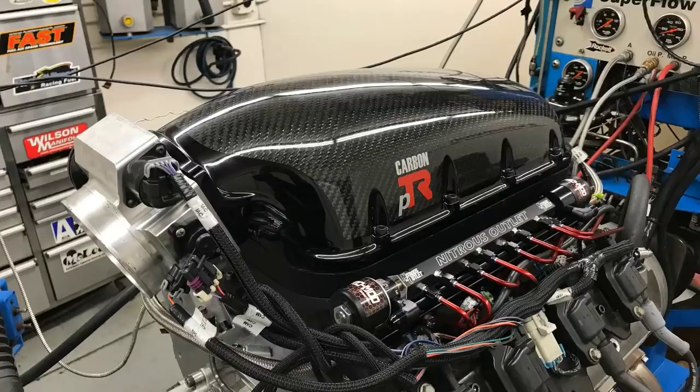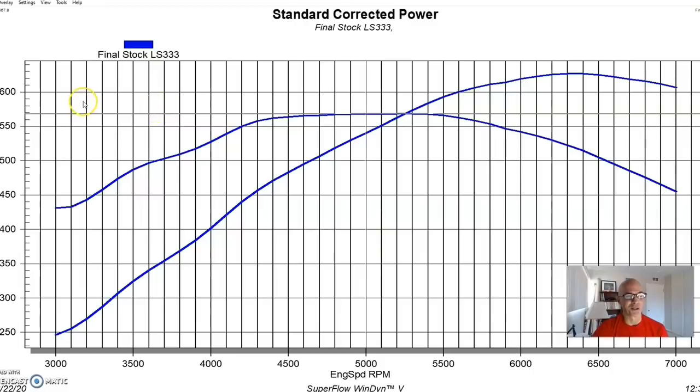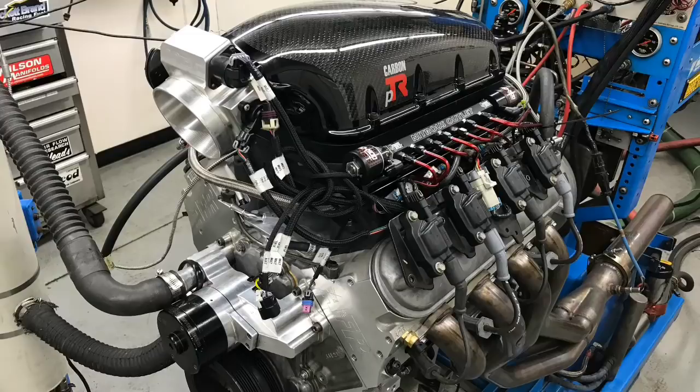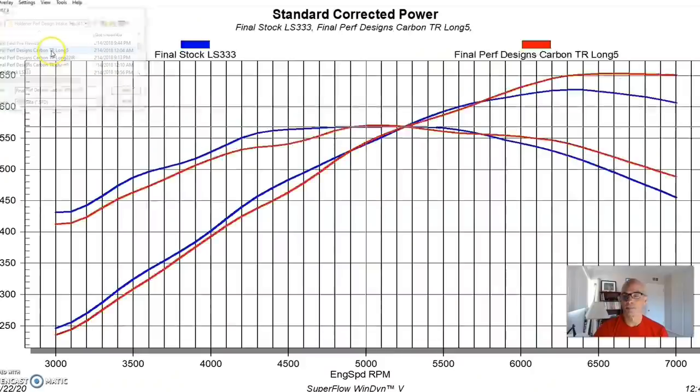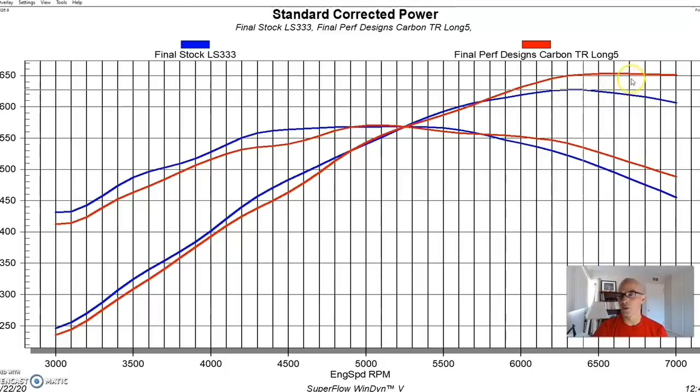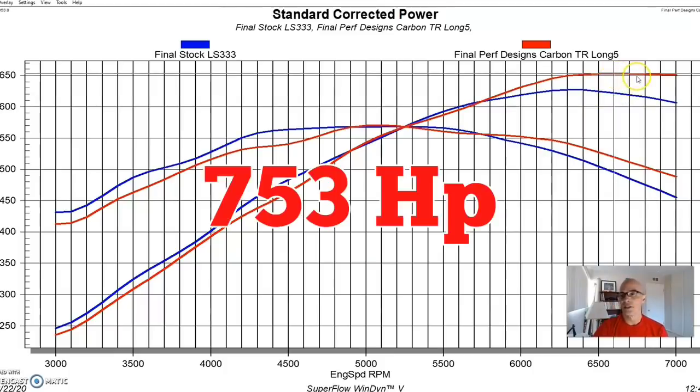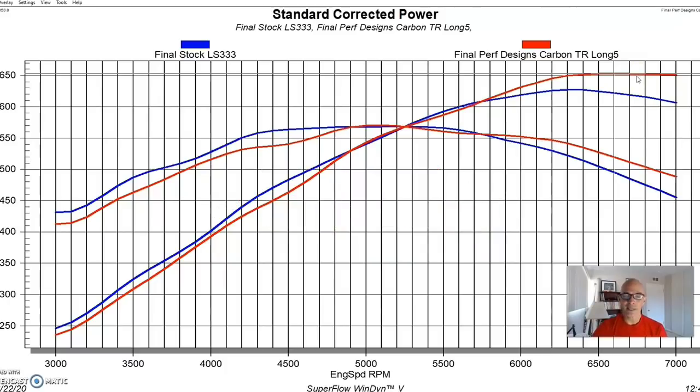I like the manifold. It was cool looking. Obviously the carbon fiber lid is super cool, but I would be so worried about just scratching it or ruining it because all of my other stuff is junkyard stuff. Here's what happened when we put the Carbon TR version on with the longest of the available runners. It did indeed pick up quite a bit of power. Our output jumped from 627 horsepower to 653 horsepower.